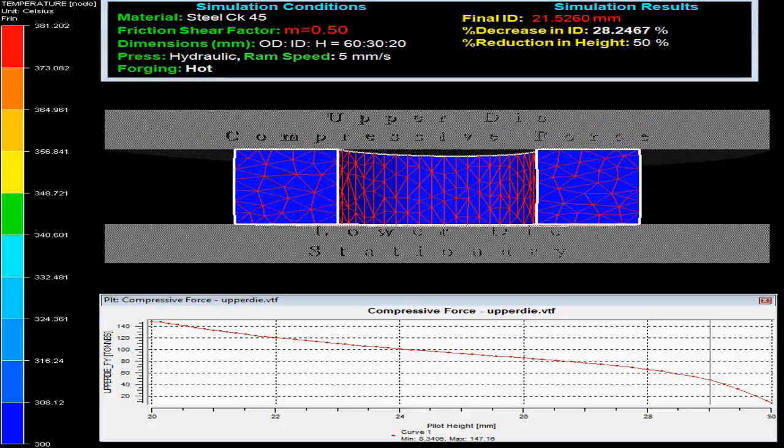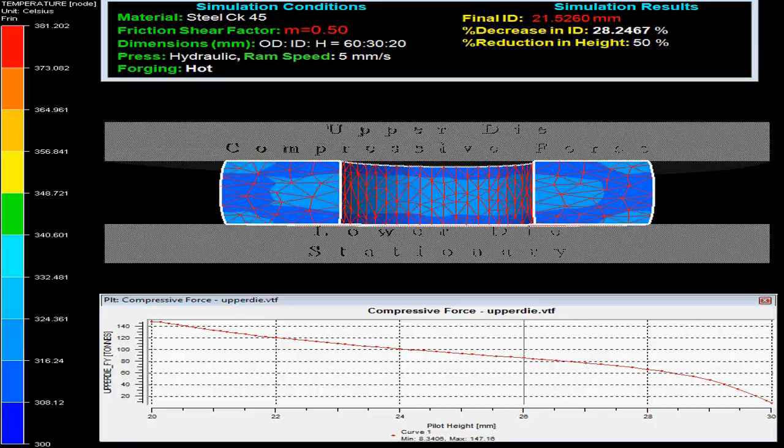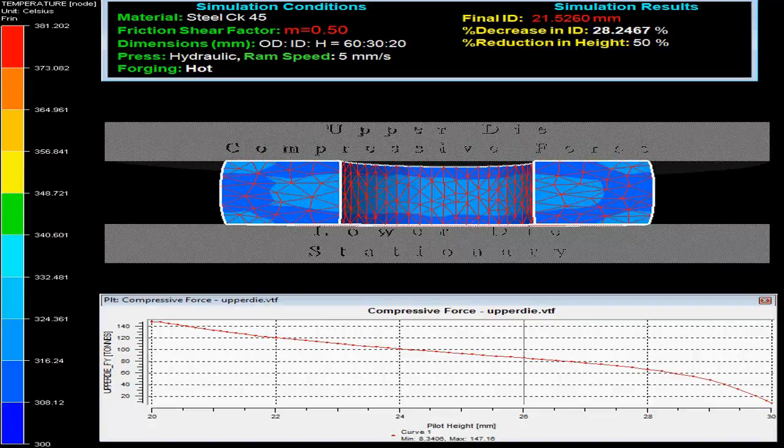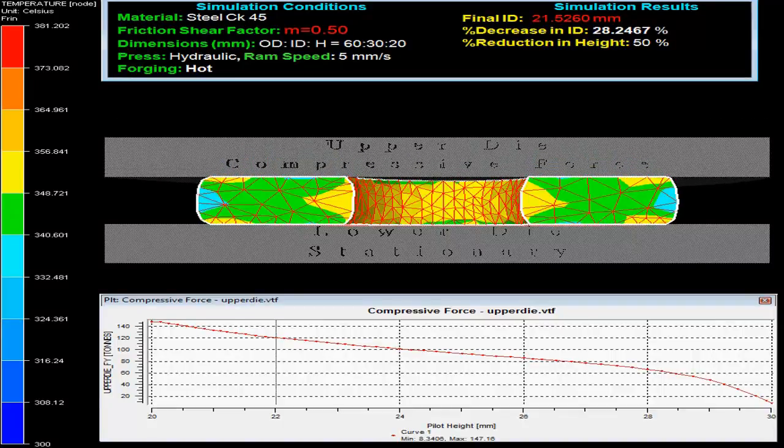At the bottom, the graph between force on upper die versus pilot height is shown. The temperature evolved during the process can be compared with the help of the scale given in the left side.